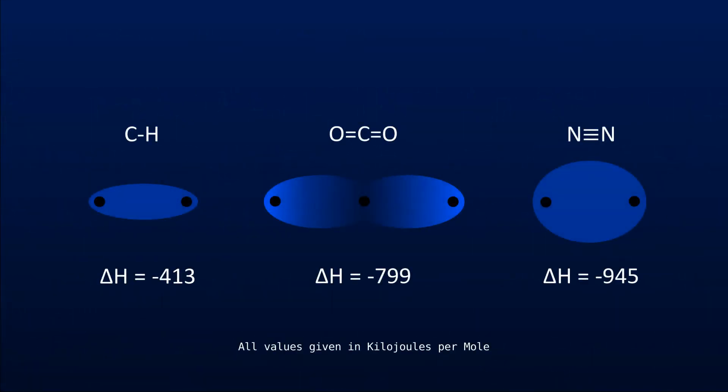What makes nitrogen so stable and non-reactive? The strength of a chemical bond is measured by the amount of energy it takes in kJ per mole to separate the atoms. Most common bonds, such as C-H, require around 300-400 kJ per mole to break, since they only share one pair of electrons.